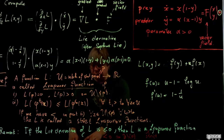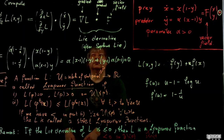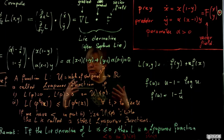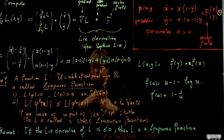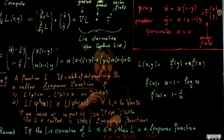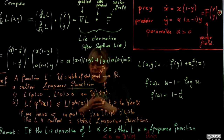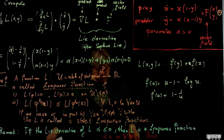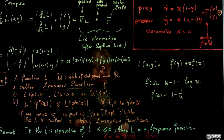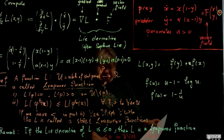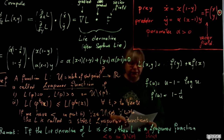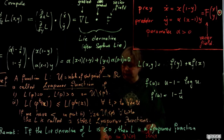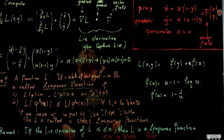In the Lotka-Volterra example, L is a Lyapunov function but not strict, since the Lie derivative is exactly zero. This is sufficient to show that the stationary point is Lyapunov stable.